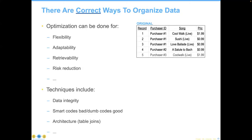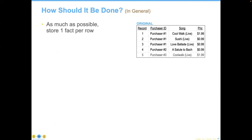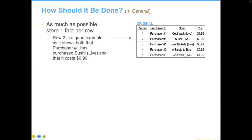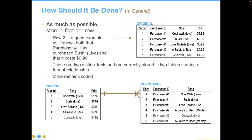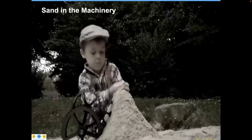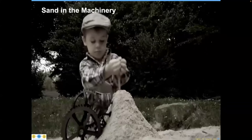There are correct ways to do this. You can optimize for flexibility, adaptability, retrievability, and risk reduction — but you have to have a goal and a purpose. The techniques include data integrity, smart codes being bad and dumb codes being good, and architectural table joins. The original principle is to store as much as possible one fact per row. Our proper way of describing this would be to break it out into two tables — each of these examples causes additional sand in the machinery, and we have to write application code around it if we're going to get rid of the problems.